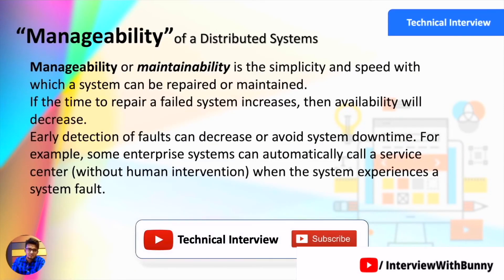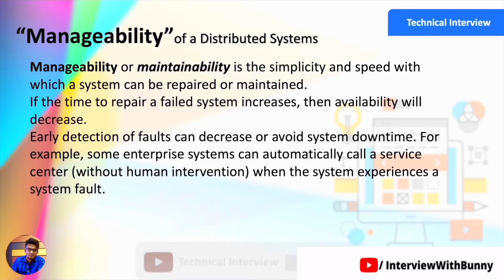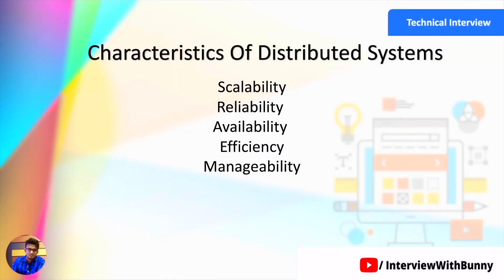The last characteristic is manageability, also called maintainability, of a distributed system. Manageability is the time or speed required to repair or maintain a system. If the time to repair a failed system increases, then the availability of the system will also decrease, resulting in business loss. It is very important to detect faults early to decrease system downtime. While designing the system, keep components as decoupled as possible to help in faster recovery.